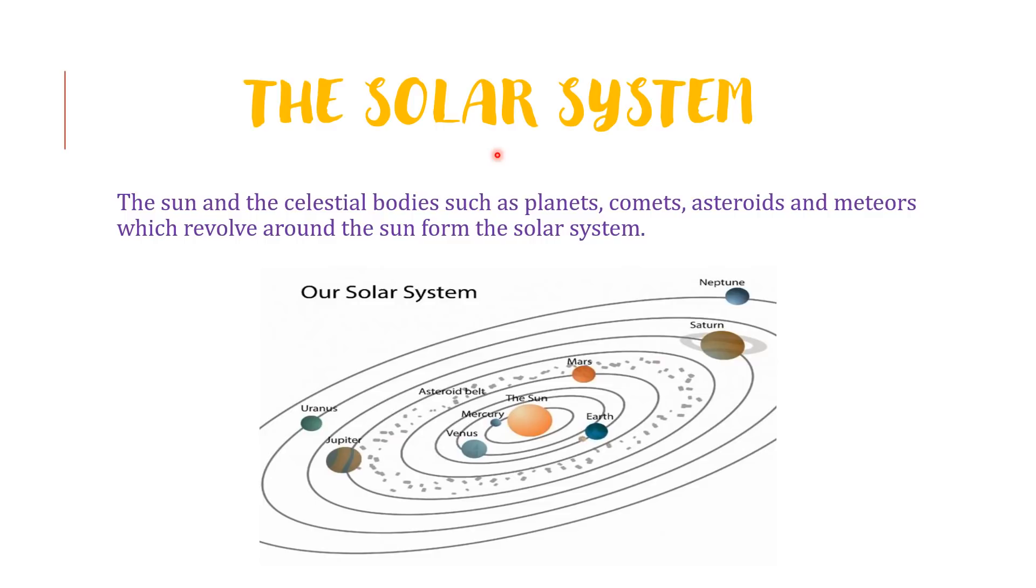The solar system - the sun and the celestial bodies such as planets, comets, asteroids and meteors which revolve around the sun form the solar system. This is the sun.